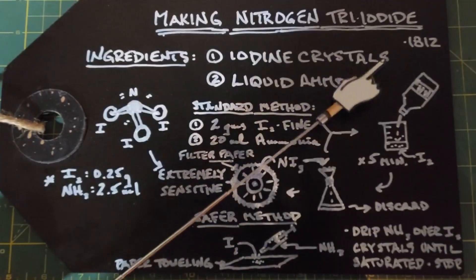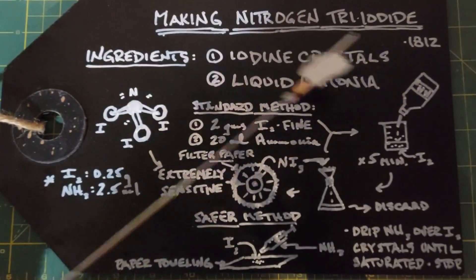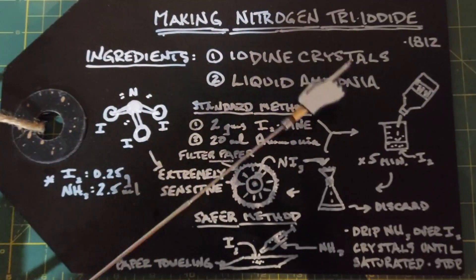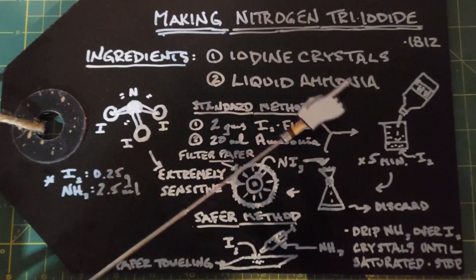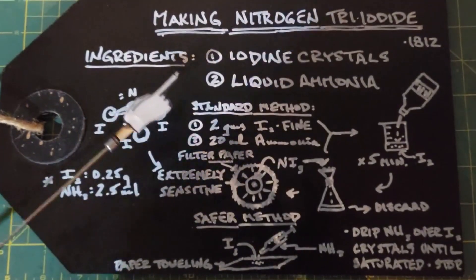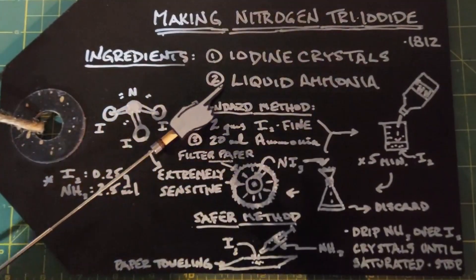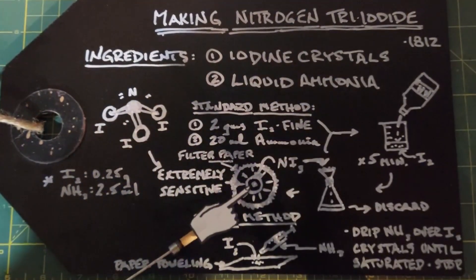To make our nitrogen triiodide we need iodine crystals, elemental iodine which we got from an earlier experiment, and liquid ammonia. This can be from a dollar store or Walmart, doesn't matter. Even if it's scented it still works. I'm going to go over two methods here: one is the standard method and the other one is a safer method.